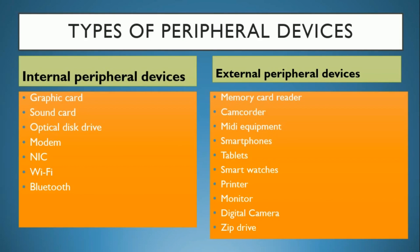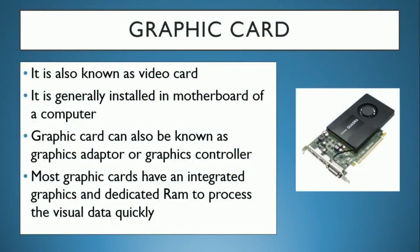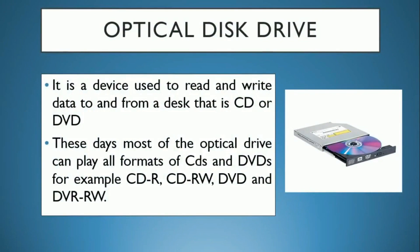Smart watches, printer, monitor, digital camera, and zip drive are also external peripheral devices. Now about the graphic card — we use it mainly when playing games; you need a graphic card for that experience. The graphic card makes the speed of the computer very fast. There are two types: integrated and dedicated. In integrated, it divides and uses the existing RAM, while dedicated is a separate card.